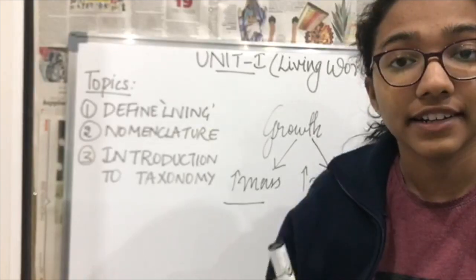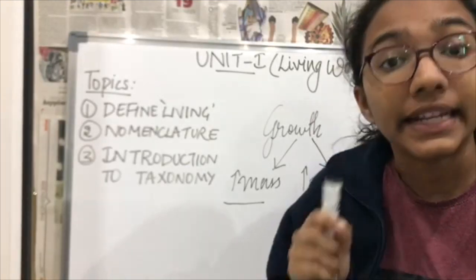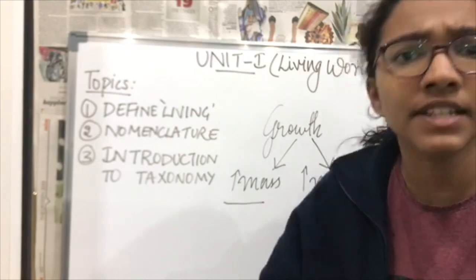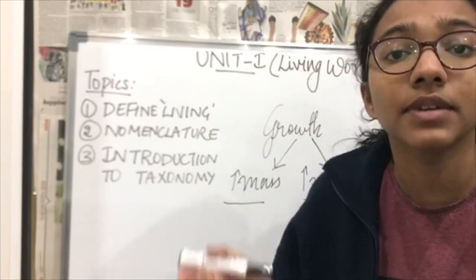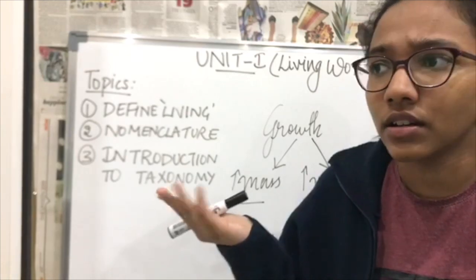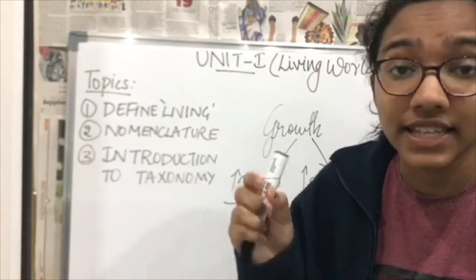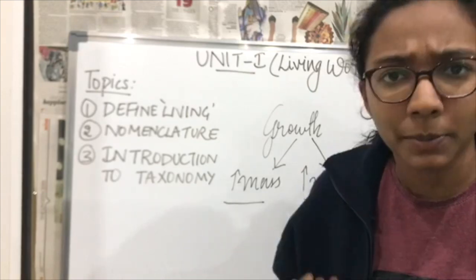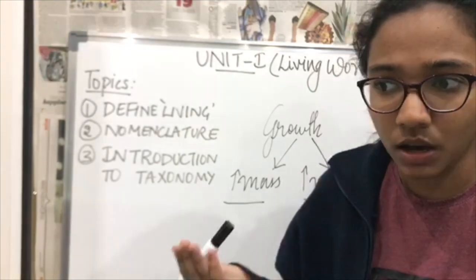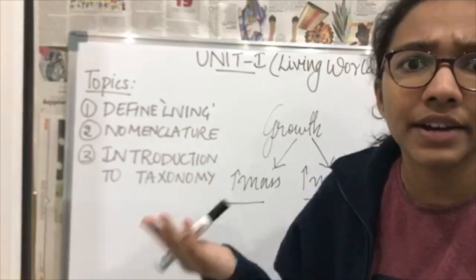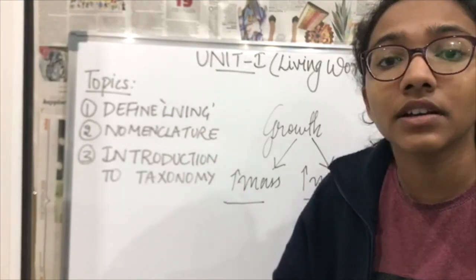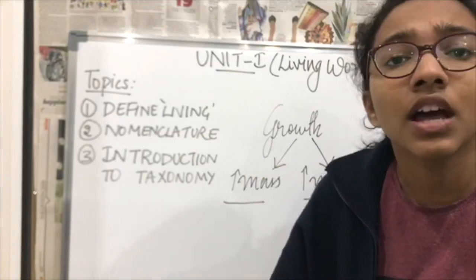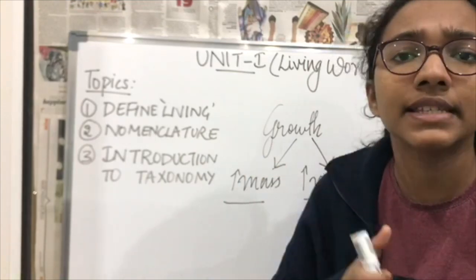Now the most important characteristic of a living organism, and this one is a defining characteristic, that means every single living organism irrespective of its size and composition exhibits this property, that is metabolism. We're all made up of chemicals. We're made up of cells, cells are made up of atoms, and these chemicals undergo reactions.